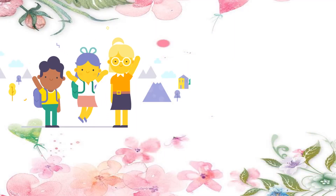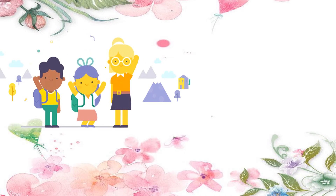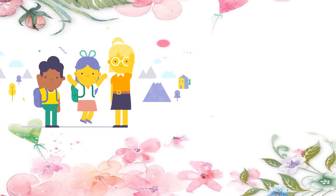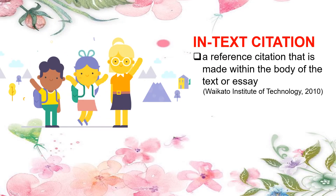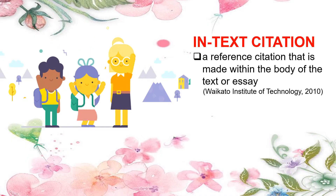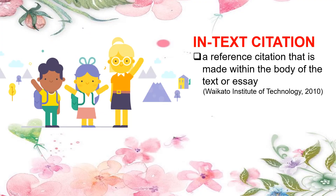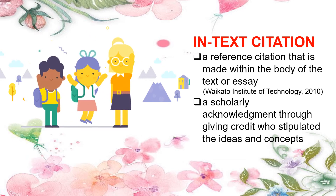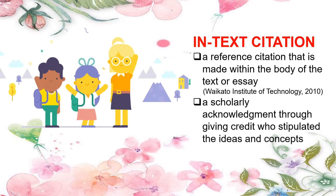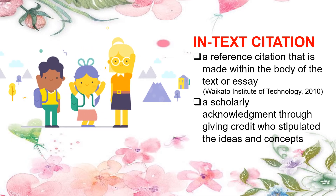There are two things that you need to remember in using APA. First, it is used as an in-text citation, and second, it is used in reference citation. Let us begin with in-text citation. The in-text citation is a reference citation that is made within the body of the text or essay, according to Waikato Institute of Technology in 2010. We use in-text citations every time we quote, summarize, and paraphrase statements, information, and ideas that came from others. It is a scholarly acknowledgement through giving credit to who stipulated ideas and concepts.